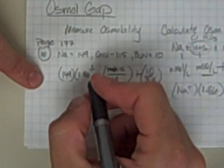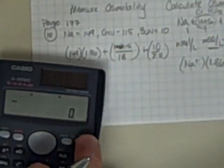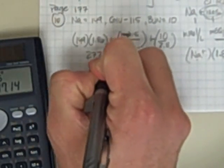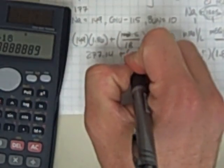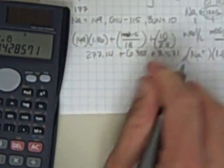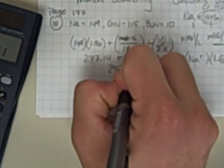So when I crunch up these numbers, I end up with, and I'll go ahead and do it for you here. So 149 times 1.86 gives me 277.14 plus 115 divided by 18, which is 6.388. And then 10 divided by 2.8 is 3.571.